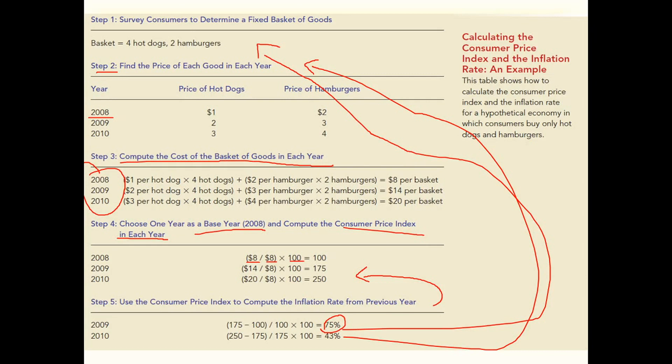That's it for this part. We learned how to calculate the inflation rate using the Consumer Price Index. In the real world there are around 600 goods rather than just two, and we need to calculate the change in price level of all those goods from one year to another, while also choosing a base year where the price index is set to 100. See you in the next part.